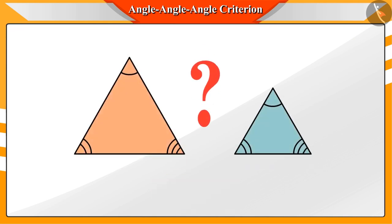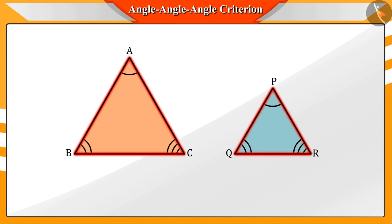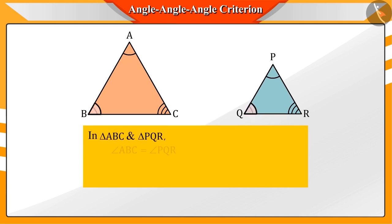When do we say that the given two triangles ABC and PQR are similar? In the previous video, we saw that two triangles are said to be similar when their corresponding angles are equal and their corresponding sides are proportional.